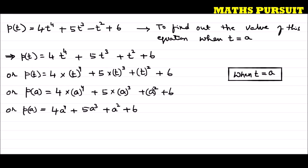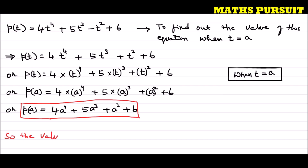So guys, this is our answer. We got P(a) = 4a⁴ + 5a³ + a² + 6. This is our answer, and we can write our concluding note saying that the value of p(t) at t = a is 4a⁴ + 5a³ + a² + 6.